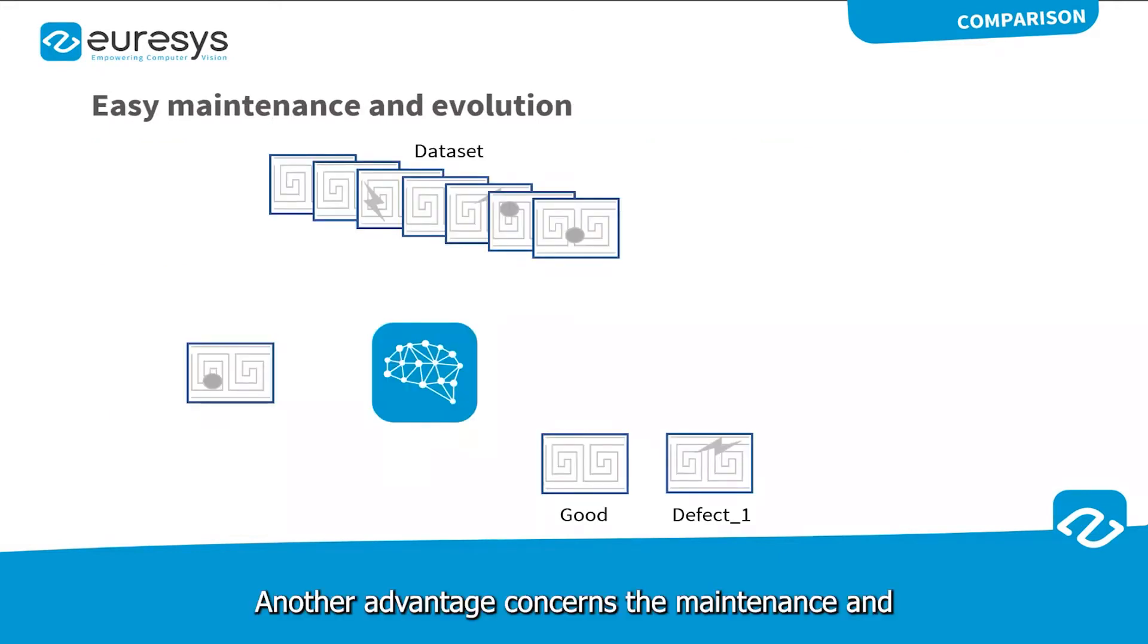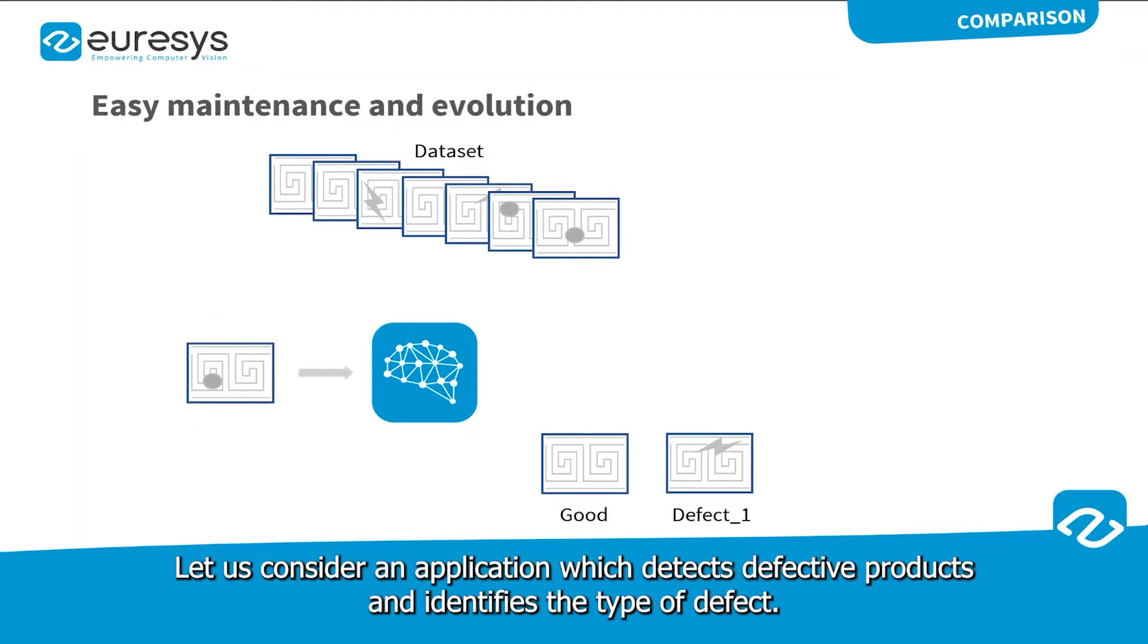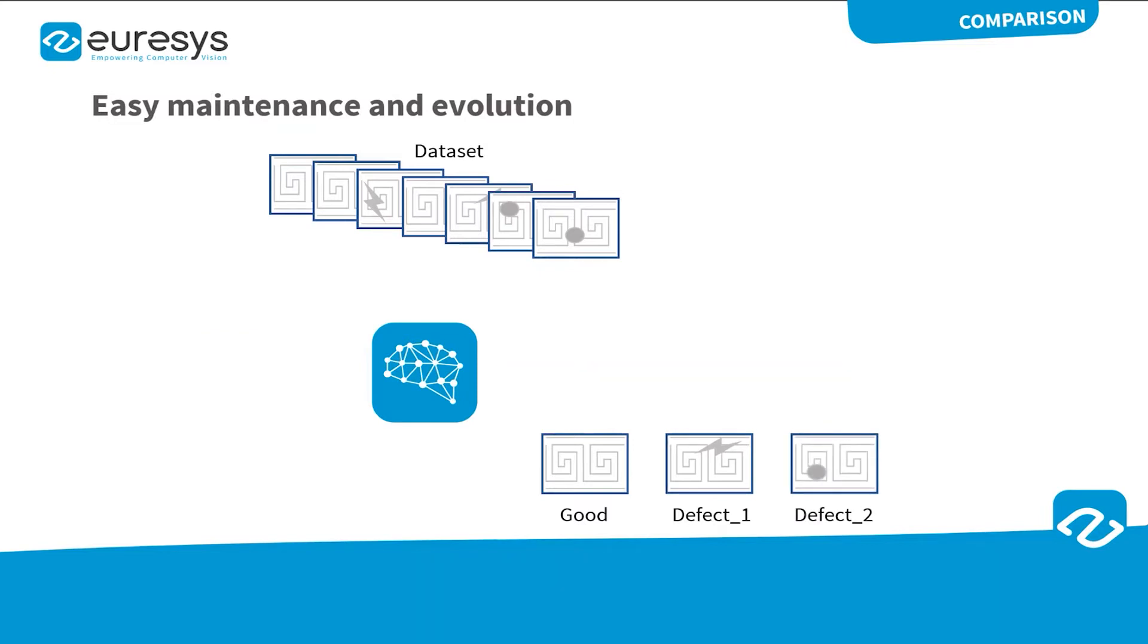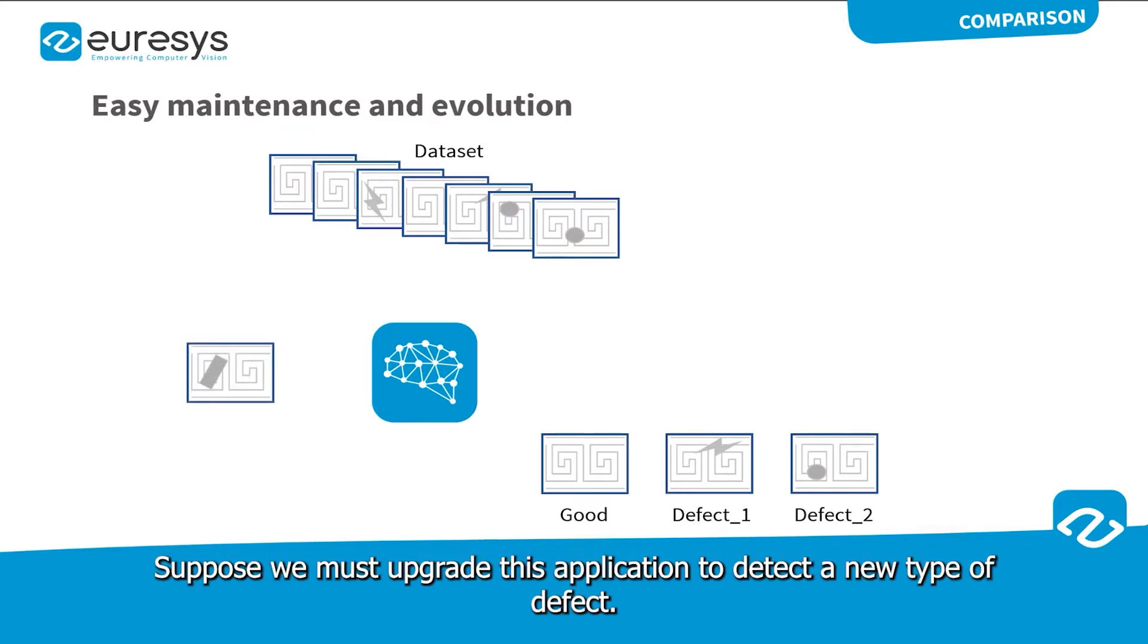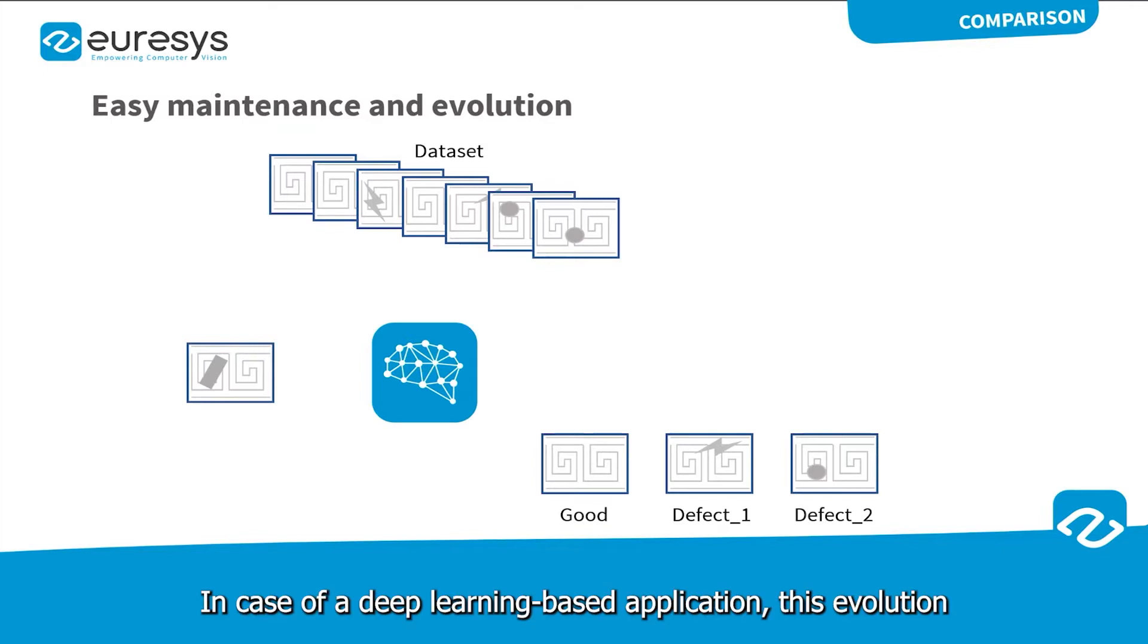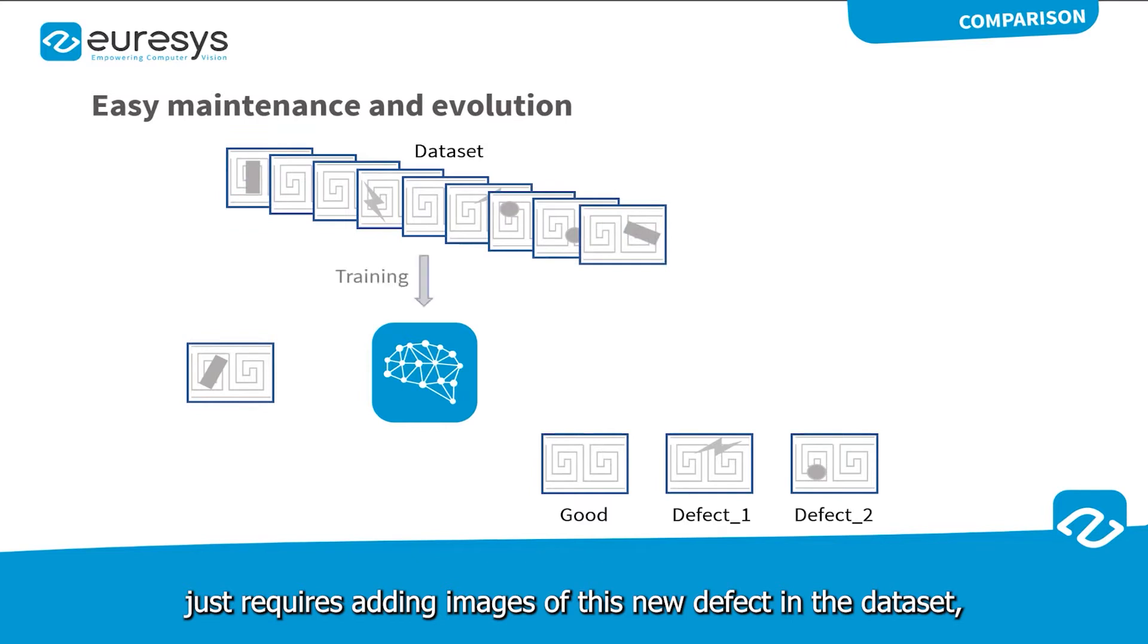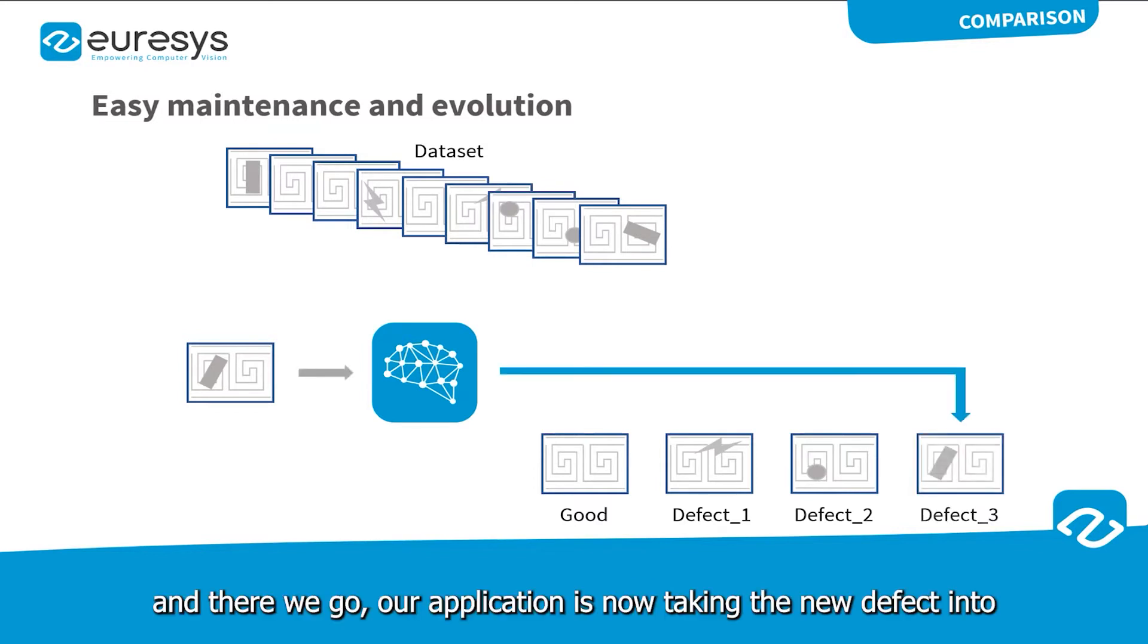Another advantage concerns the maintenance and evolution of such applications. Let's consider an application which detects defective products and identifies the type of defect. Suppose we must upgrade this application to detect a new type of defect. In case of a deep learning based application, this evolution just requires adding images of this new defect in the dataset and training the neural network with the updated dataset. And there we go! Our application is now taking the new defect into account without the modification of a single line of code.